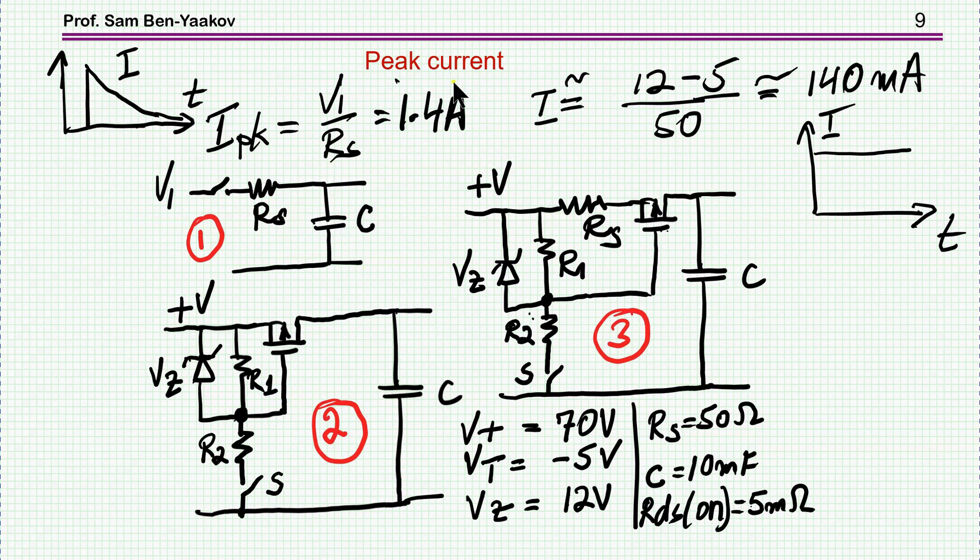So what about the peak current? Here, the peak will be the voltage over RS when the voltage here is zero, which is 1.4 volt. Here, it's going to be dependent on the RS. This is like a current source because once we have a voltage here, then we have about a threshold voltage between gate and source, and the rest is on this resistor. So it makes this circuit a constant current.